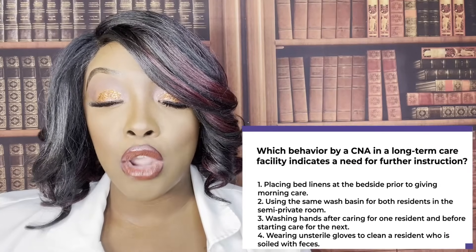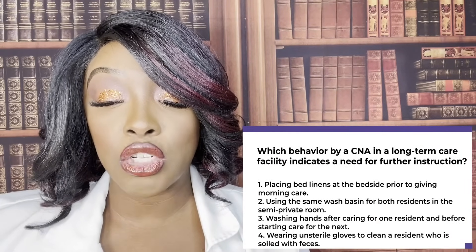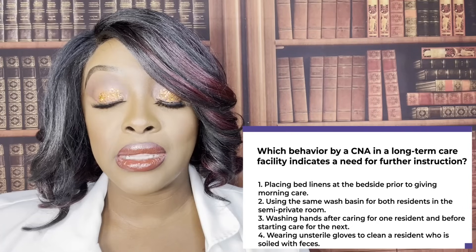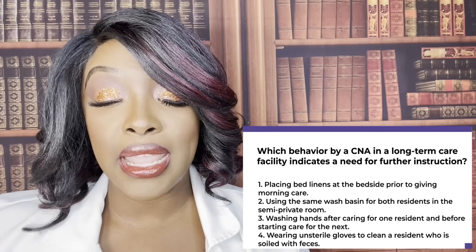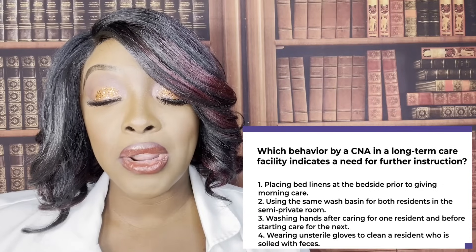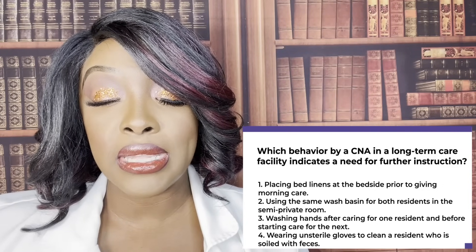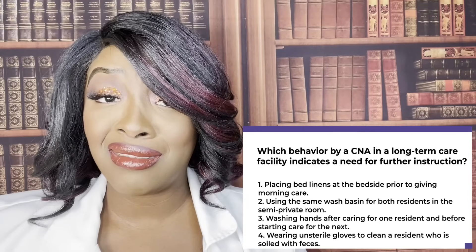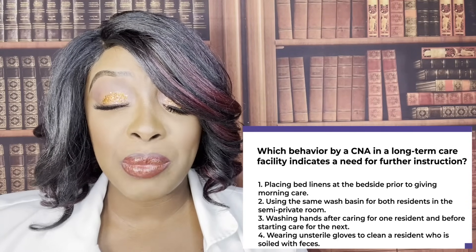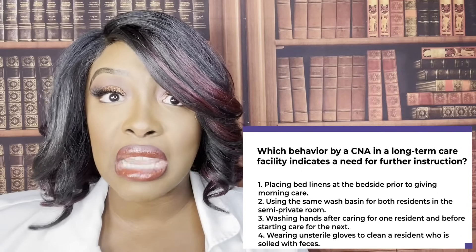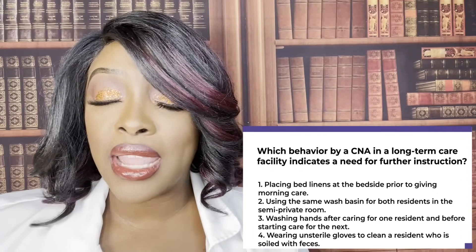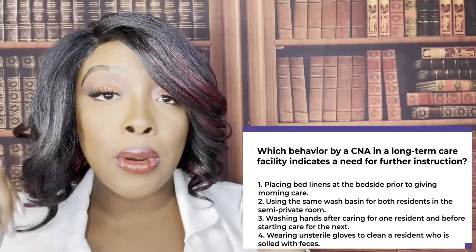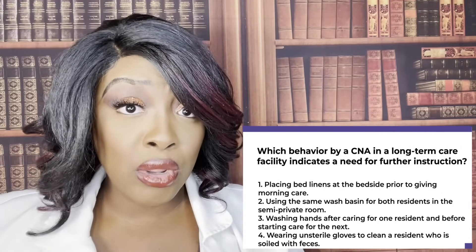Which behavior by a CNA in a long-term care facility indicates the need for further instruction? One, placing bed linens at the bedside prior to morning care. Two, using the same basin for both residents in a semi-private room. Three, washing hands after caring for one resident and before starting care for the next. Or four, wearing unsterile gloves to clean a resident soiled with feces. The correct answer is two — using the same wash basin for both patients is a serious infection control violation and that CNA needs further teaching.